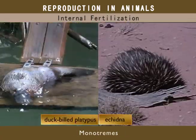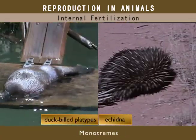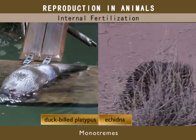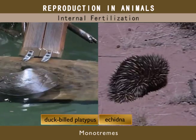The egg-laying mammals, or monotremes, include the echidna and the duck-billed platypus.